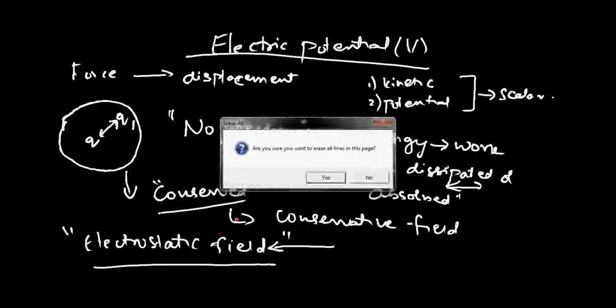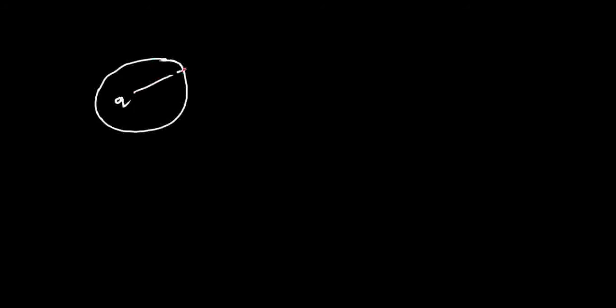How do you define electric potential V due to a charge q? Say you have a point P which is at a distance r from the charge. Electric potential V at point P due to a charge q, which is at a distance r from the charge, can be defined as the amount of work done in moving a unit positive charge from infinity to this point P against the applied force.